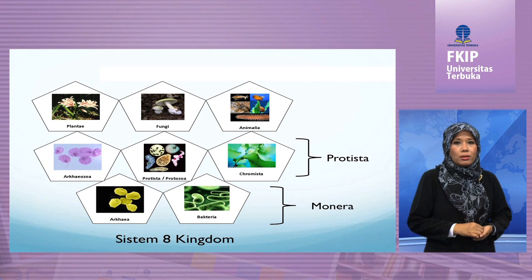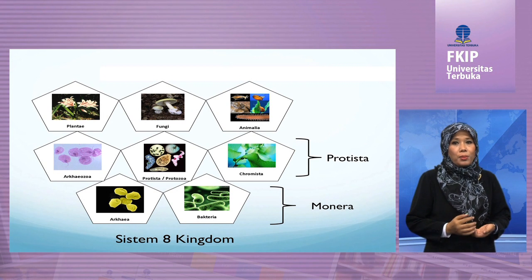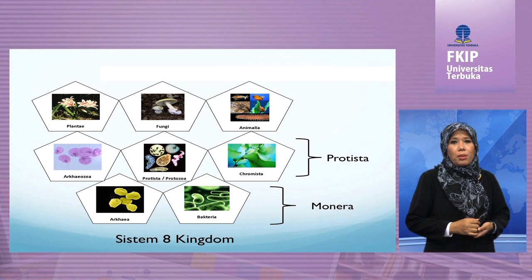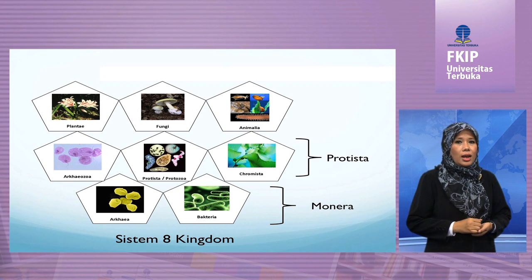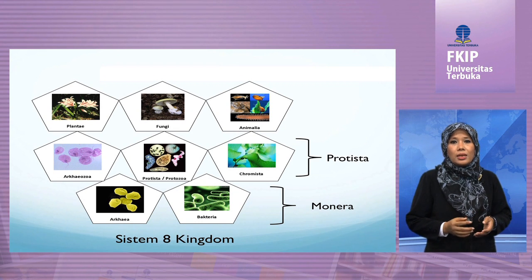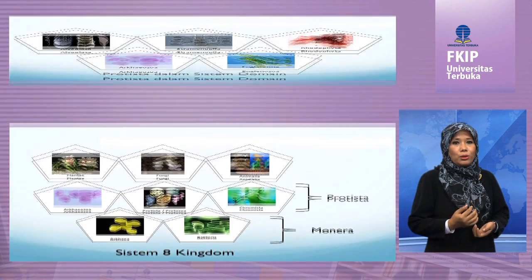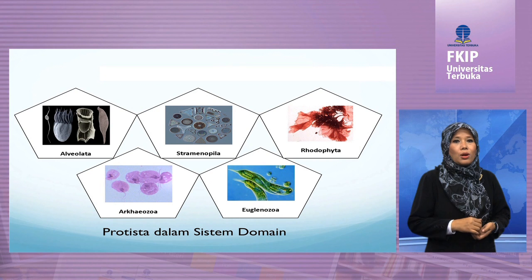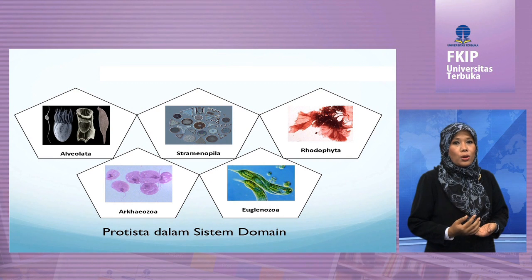Dalam sistem domain, kelompok protista diuraikan lagi menjadi beberapa kelompok berdasarkan perbedaan yang muncul. Perbedaan pada kingdom protista menunjukkan bahwa telah terjadi perkembangan evolusi protista sehingga terbentuk keanekaragaman protista. Dalam sistem domain, kingdom protista diuraikan lagi menjadi lima calon kingdom, yaitu kelompok Archaeozoa, kelompok Euglenozoa, kelompok Alveolata, kelompok Stramenopila, dan kelompok Rhodophyta.